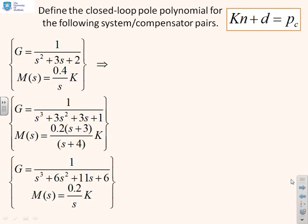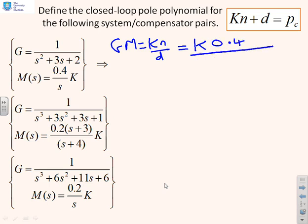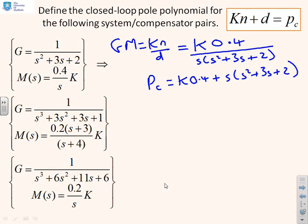A question then: Define the closed loop pole polynomial for the following system compensator pairs. The first thing to do is to write GM equals Kn over d, which in this particular case is going to give me K times 0.4 over s times s squared plus 3s plus 2. Then I can write Pc equals K times 0.4 plus s times s squared plus 3s plus 2.